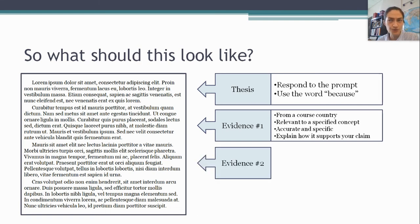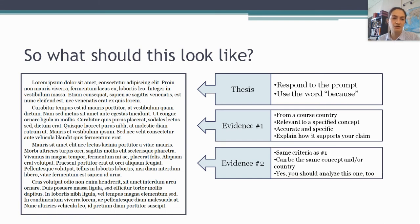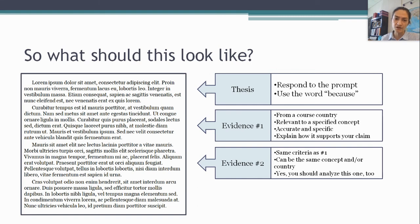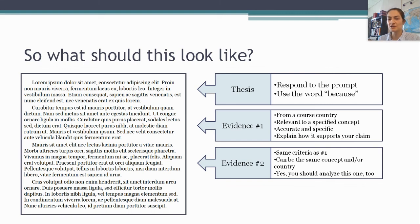Paragraph number three, body paragraph number two: your second piece of evidence. You're going to lather, rinse, repeat. Follow the same criteria as the first piece of evidence. You can use the same concept again, you can use the same country again, but you don't have to — you can broaden out if you'd like. There is no rule saying you must use at least two countries and at least two concepts. And again, do analysis on this one too. There is no penalty for trying more times than you need to, and I think it's a lot safer — not to mention better practice of writing and argumentation overall — if you analyze all of your evidence.